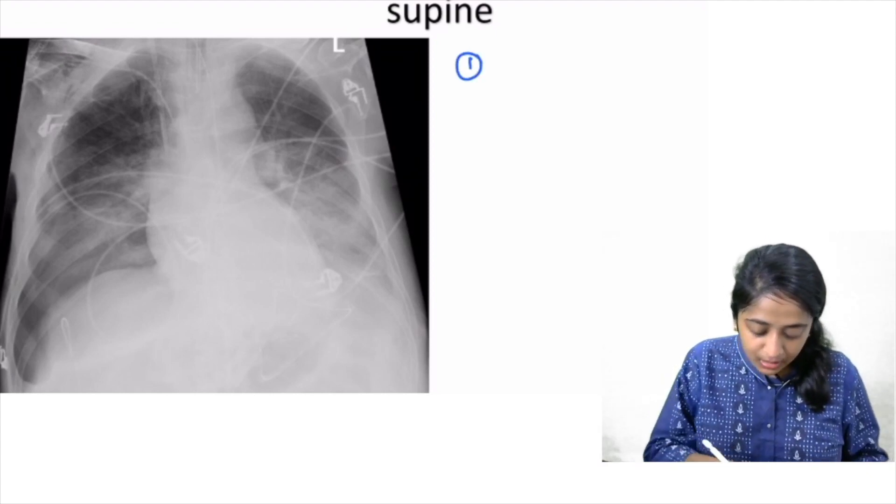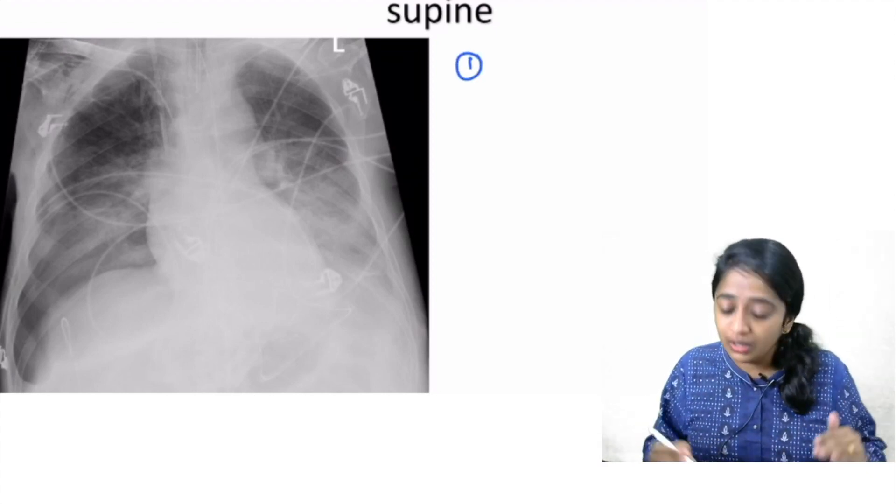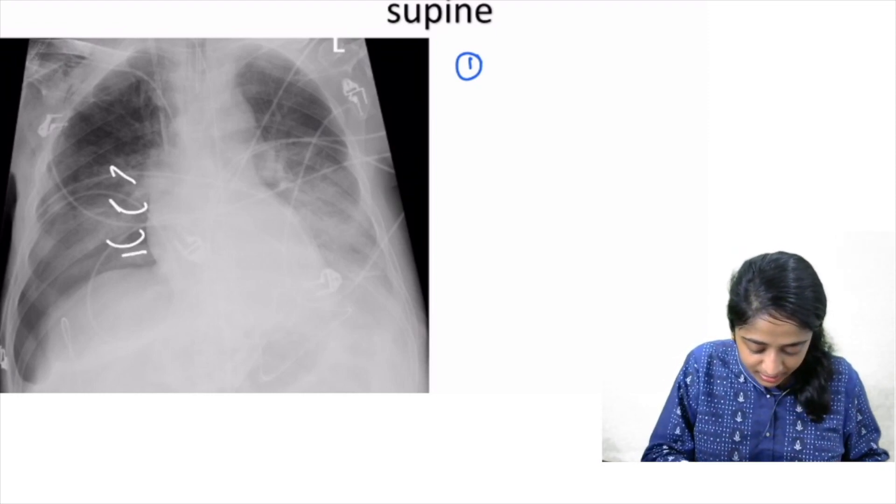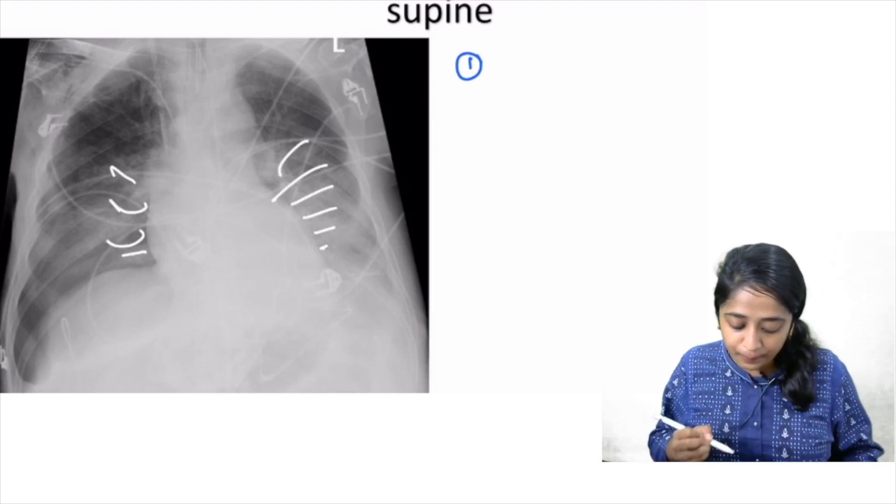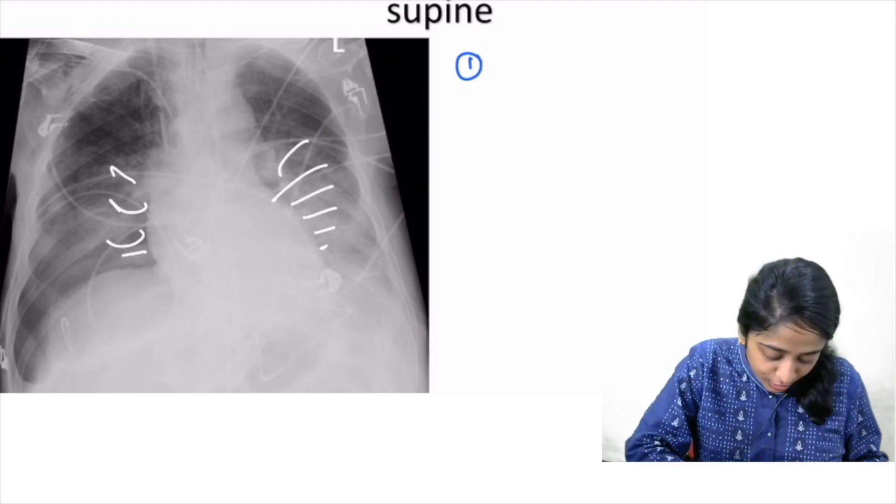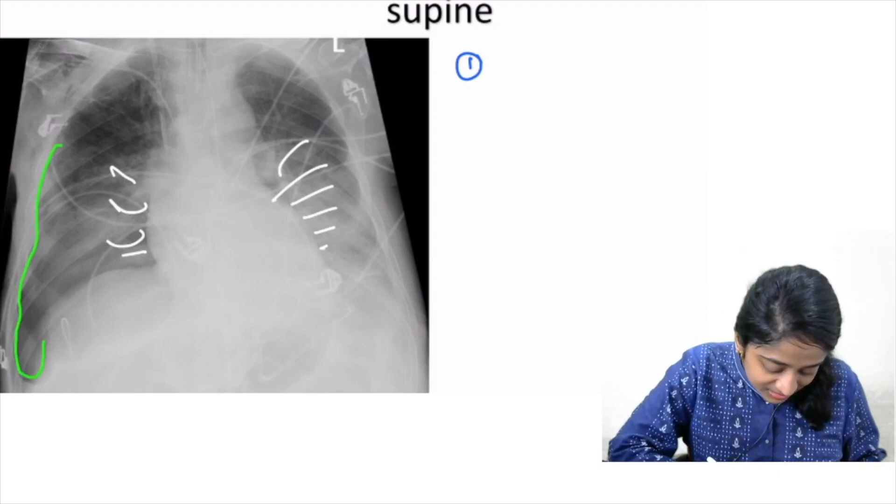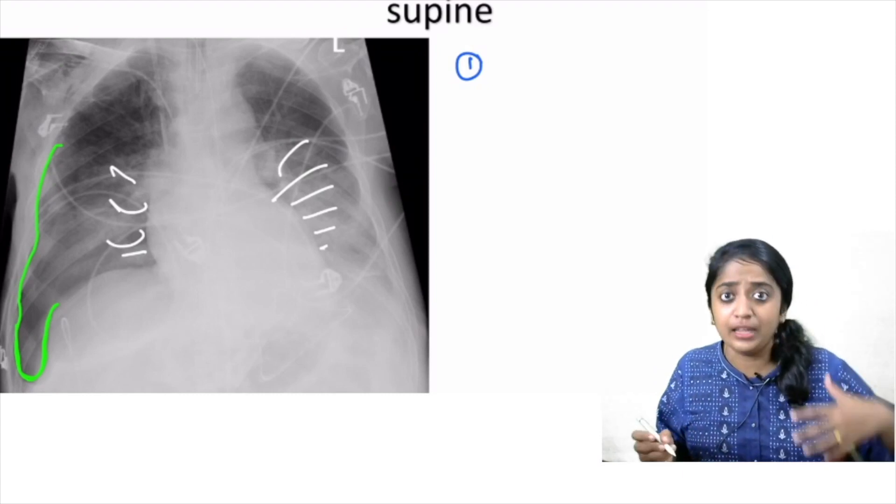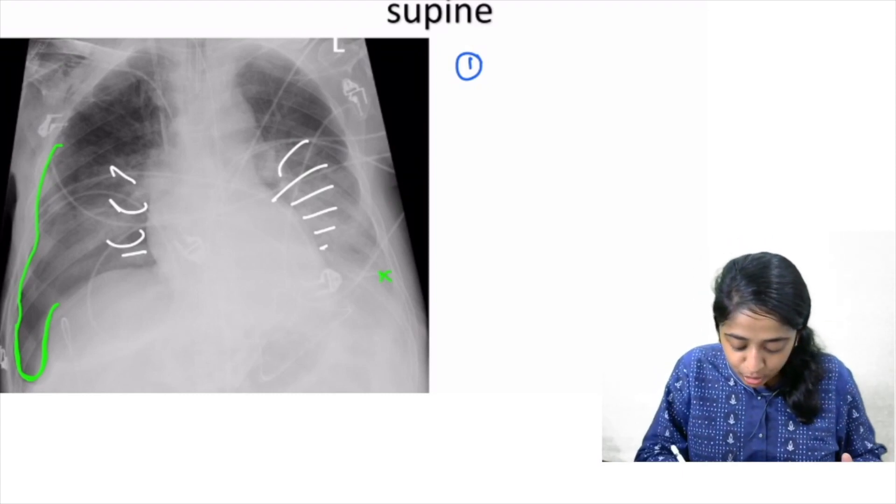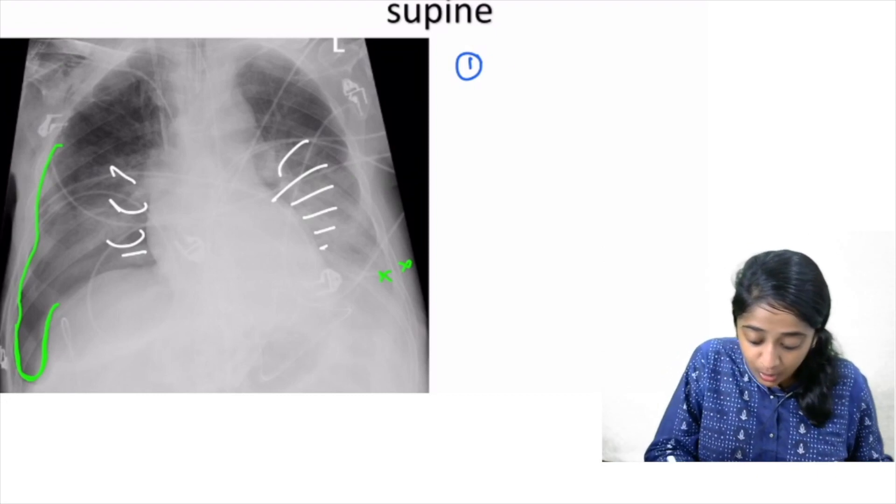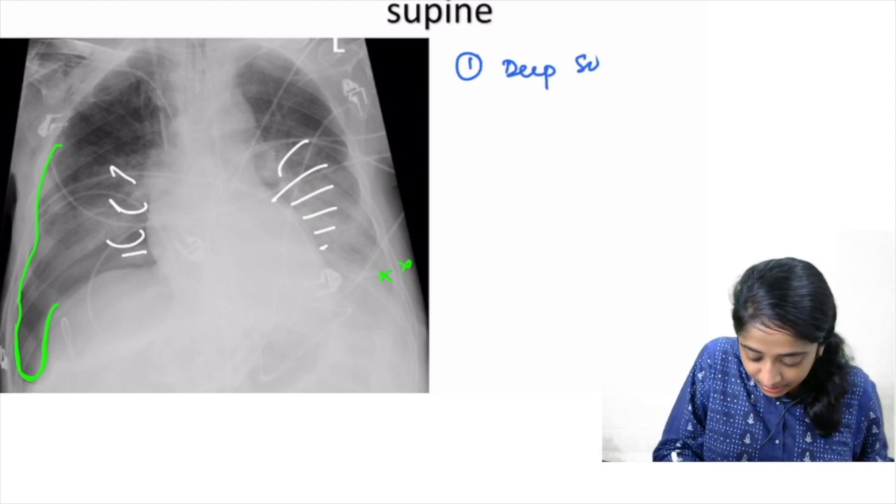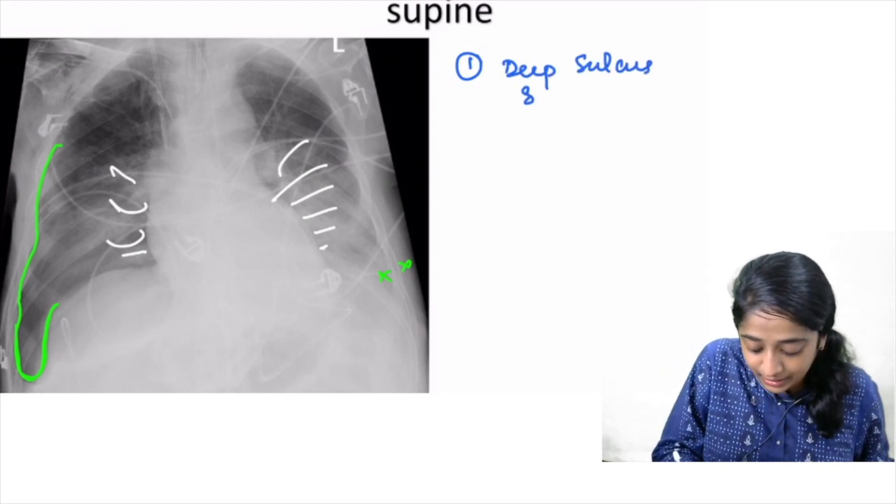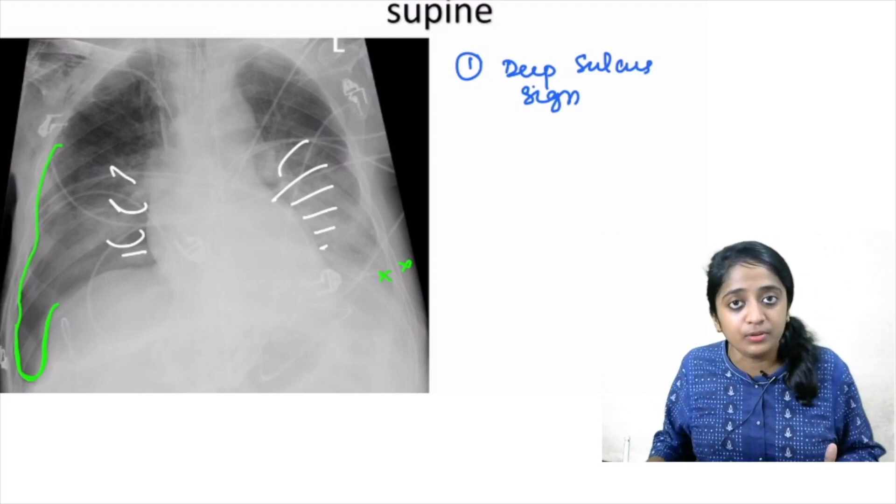Apparently, you can see that both the lung fields, there are perihilar opacities. More importantly, what is the striking feature? You can see that there is a deepening of the right costophrenic angle, which is appearing much more lucent as compared to the contralateral side. This is our deep sulcus sign. So this is the deep sulcus sign that I showed you first in the radiograph.